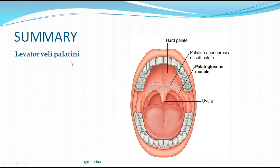This muscle is important in preventing velopharyngeal incompetence — a condition where the soft palate is unable to cut off the connection between the nasopharynx and oropharynx, either because the soft palate is short or due to pharyngeal surgeries. This can cause food to go upwards and also cause speech sounds to resonate in the nasal cavity, producing a hypernasal voice.